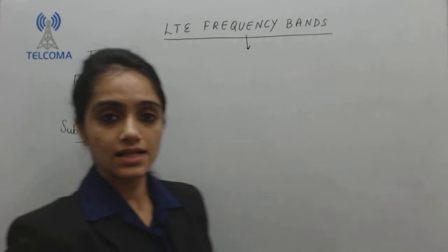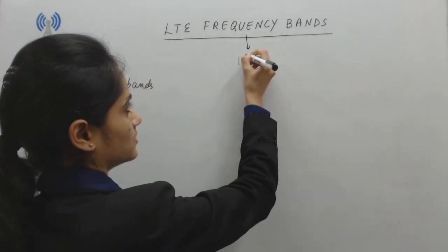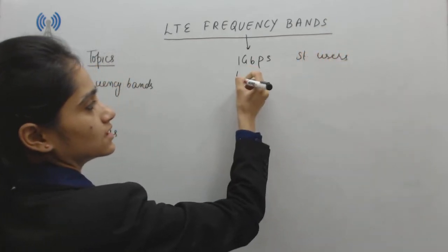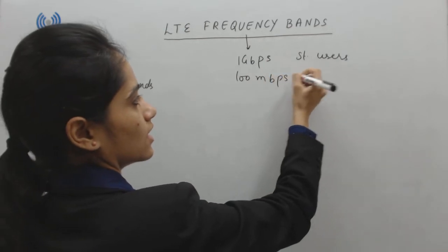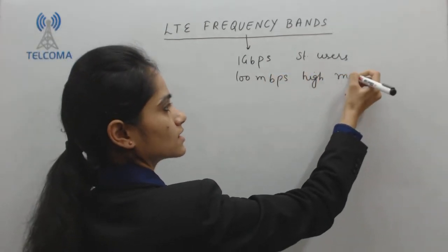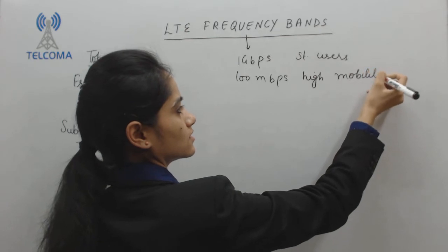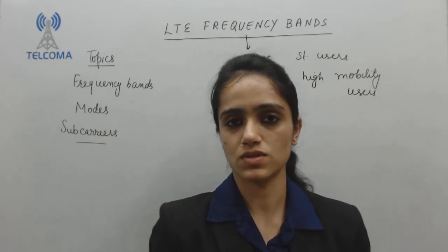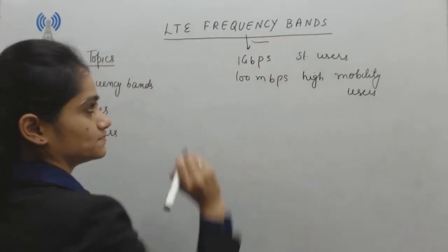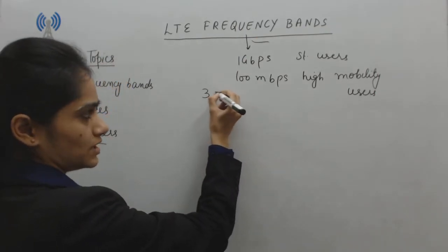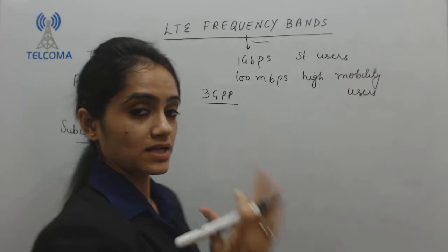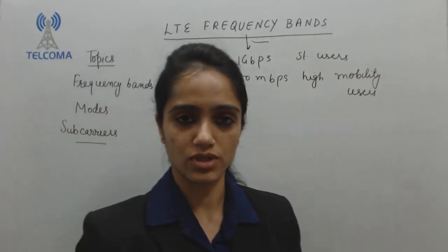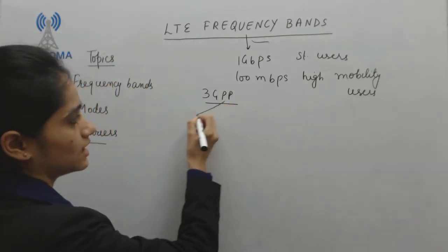LTE has an aim of 1 gigabit per second for stationary users and 100 Mbps for high mobility users. In order to carry this much speed you require a resource, and that resource is frequency. So in order to meet this requirement of operators as well as users, 3GPP — Third Generation Partnership Project — offers frequency bands in two modes.